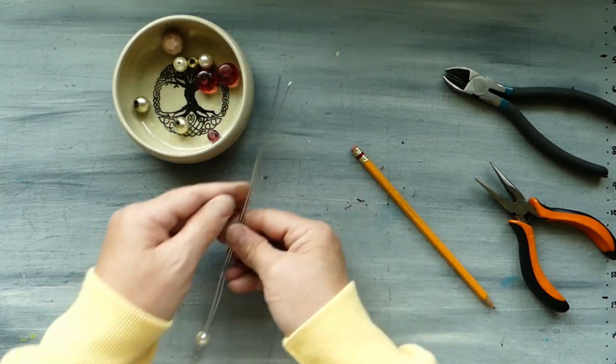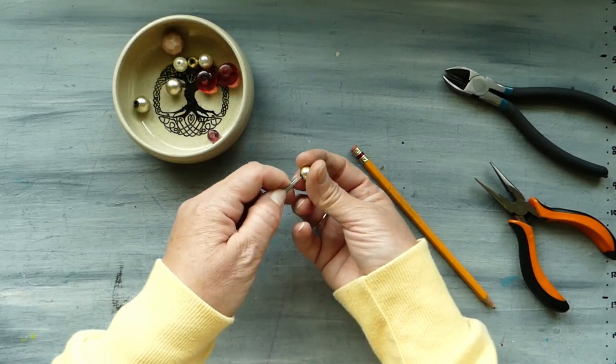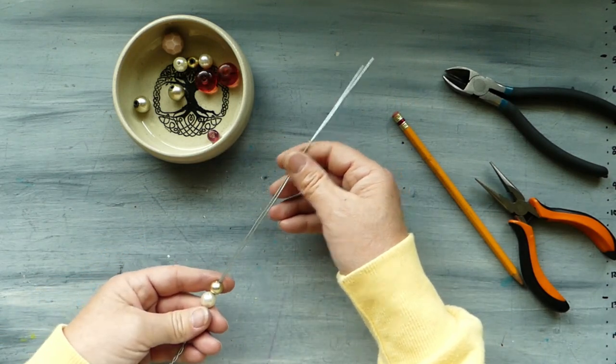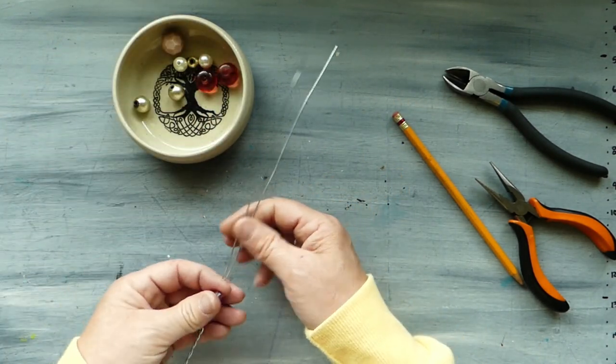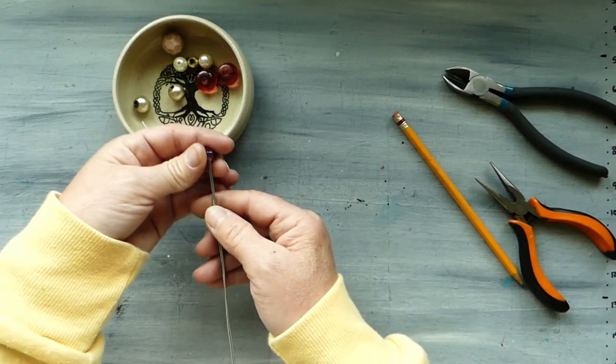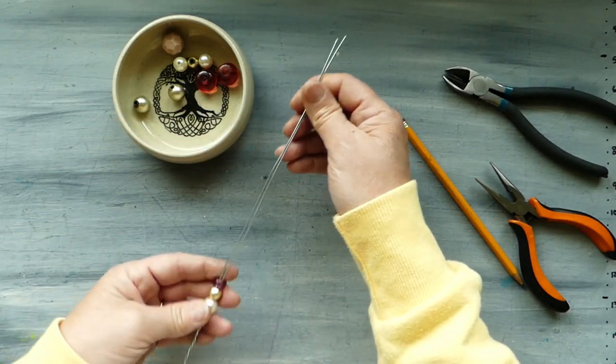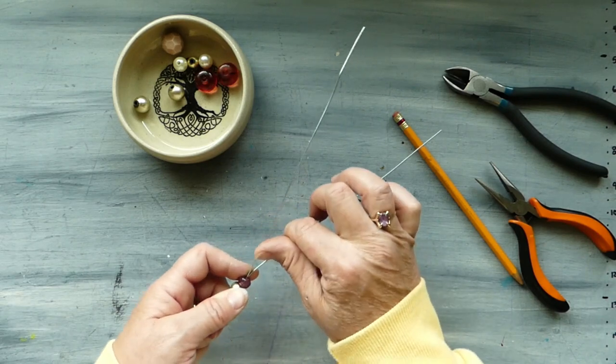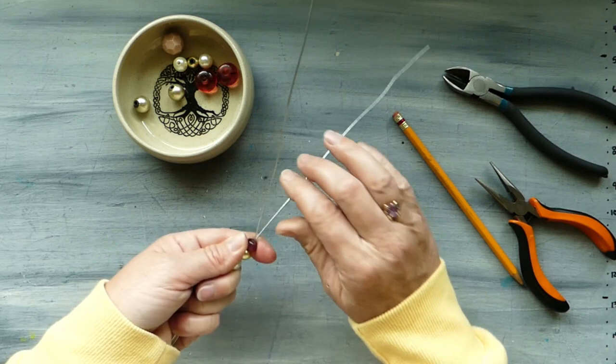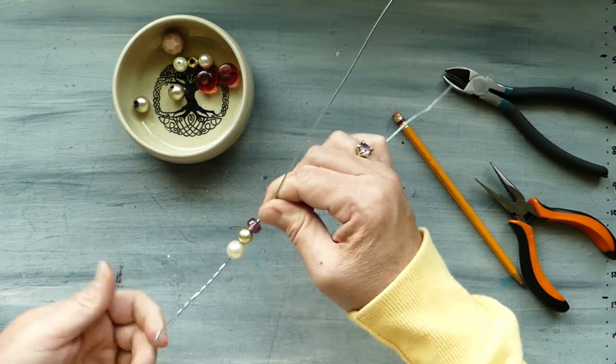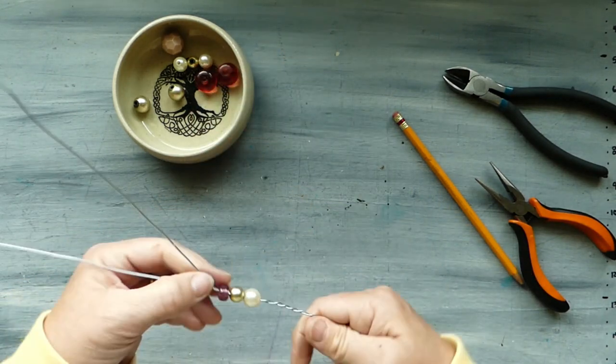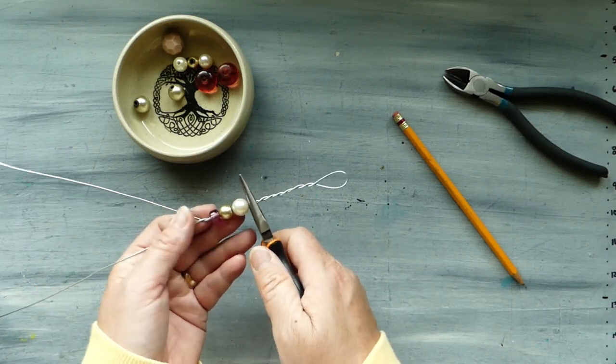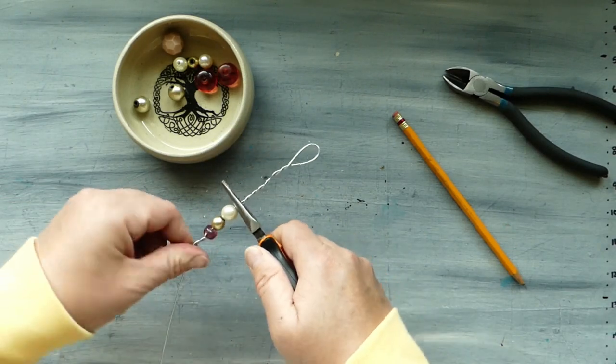And then we can stick one of our gold ones on there, pop that on there like that, and then I think we're going to take our smaller pink one and pop it on there like that. Okay, so then we are going to continue to twist this. Sometimes it helps to just grab with your pliers. It stabilizes it to give those couple of twists.